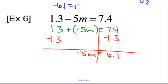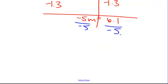So now, let's divide by negative 5. So we know that since it's a positive divided by a negative, the answer is actually going to be negative. So let's just deal with the numbers. So that cancels. We have m equals. So let's do 6.1 divided by 5. Remember, that decimal goes right there.